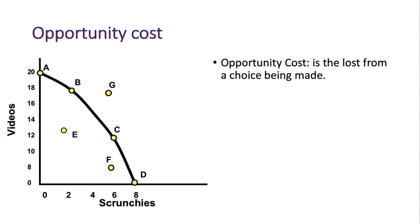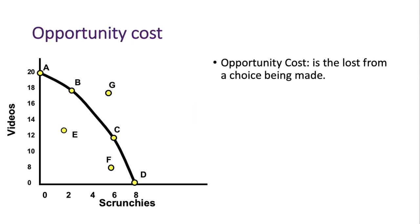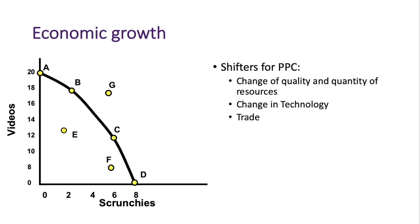Opportunity cost is the loss from a choice being made. Your opportunity cost represented on a PPC is what you give up when moving from one point to another — for example, moving from point A to point B or from point B to point C. If we move from point A to point B, we gained two scrunchies but gave up two TikTok videos. The cost of moving from point A to point B is two TikTok videos.